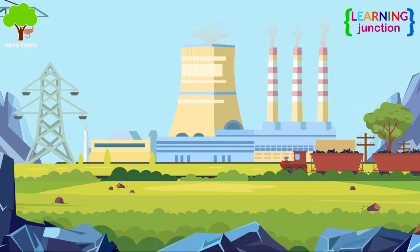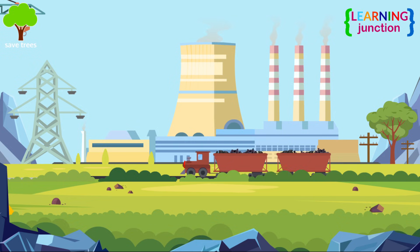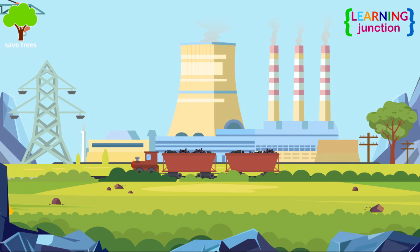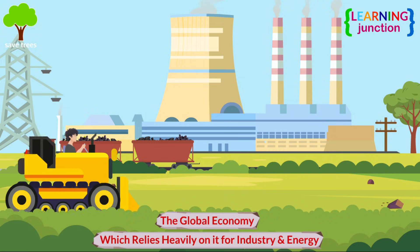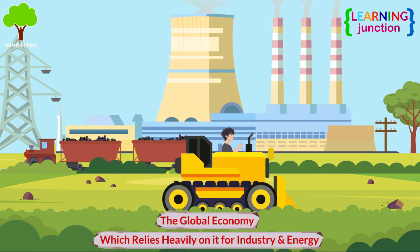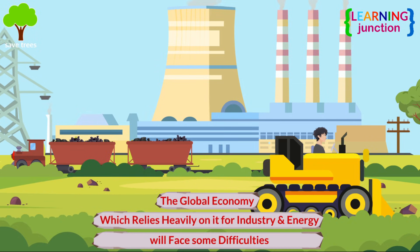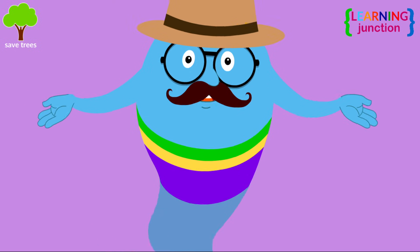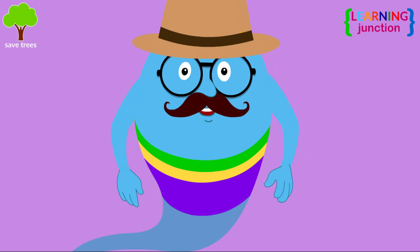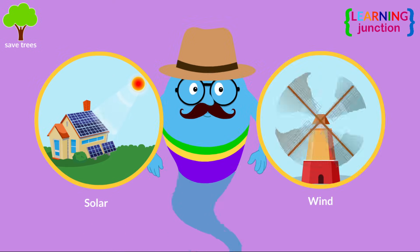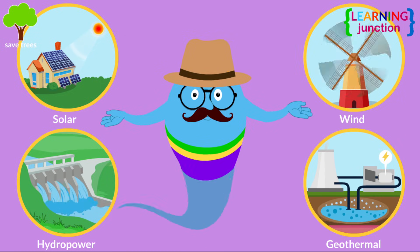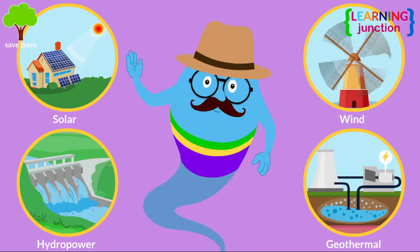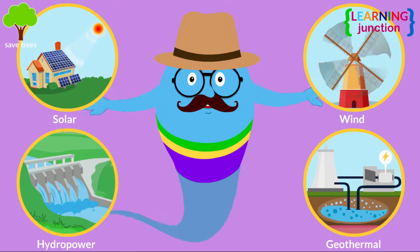If coal runs out in the coming 100 to 150 years, the global economy, which relies heavily on it for industry and energy, will face some difficulties. But people will use more renewable energy sources like solar, wind, hydropower, and geothermal energy, along with natural gas, biomass, and nuclear energy.